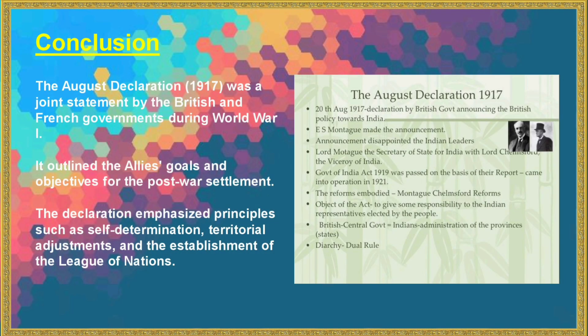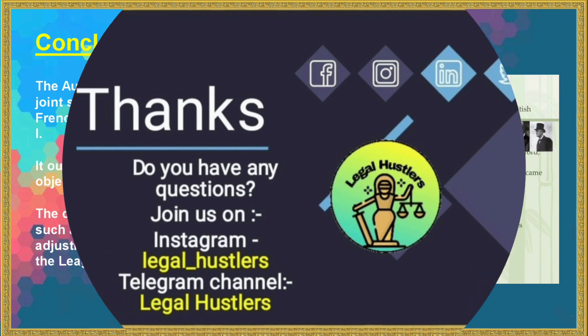The August Declaration of 1917 was a joint statement by the British and French governments during World War I. It outlined the Allies' goals and objectives for the post-war settlement. The declaration emphasized principles such as self-determination, territorial adjustments, and the establishment of the League of Nations.